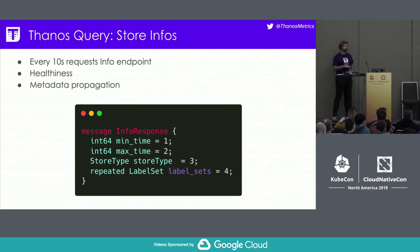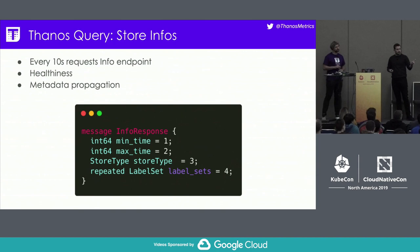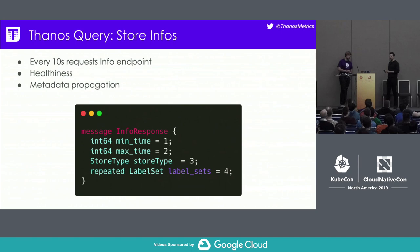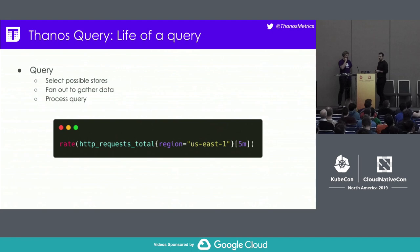The querier periodically goes out to these stores and calls the info endpoint. This returns the time range that a particular store can serve, what kind of store it is, and a set of labels that identify all the data in that store. This allows us to make true negative matches of our queries — we can determine which stores to skip entirely.